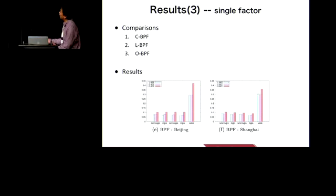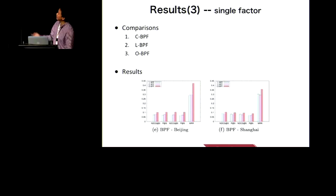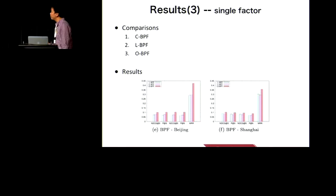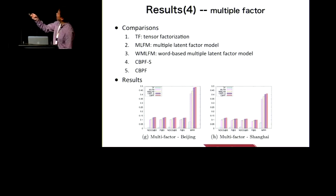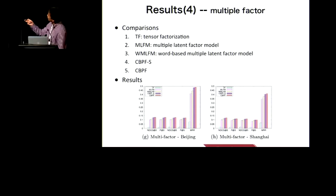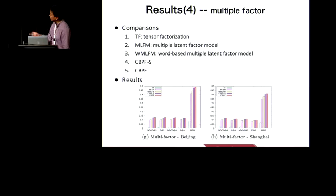The third comparison group is about testing single factors — that is, content, location, and organizer. We can easily find that only considering organizer information is most important for this task. Finally, we integrate multiple factors to do the final comparison. We adopted several baseline methods: tensor factorization, MFLM, and word-based MFLM. We can see that our method, CBPF, outperforms other baseline methods, and social relations play a minor improvement role.